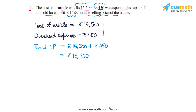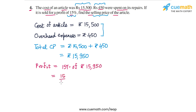We are told that the article was sold for a profit of 15%, so the profit amount will be 15% of rupees 15,950. Calculating 15/100 × 15,950, this comes out to be rupees 2,392 and 50 paise.